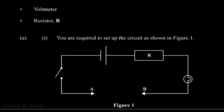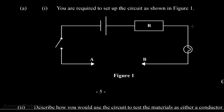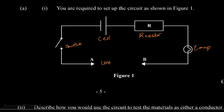You are required to set up the circuit as shown in figure one. So we have our circuit here. Let's label these items: we have a switch, a cell, a resistor, a lamp, and here we have an empty space in our circuit which is where we're going to put our unknown component — which is A, B, C, D, or E — which we'll be testing to see if they are either a conductor or an insulator.